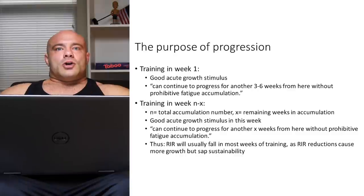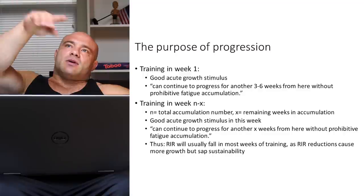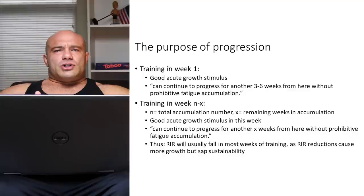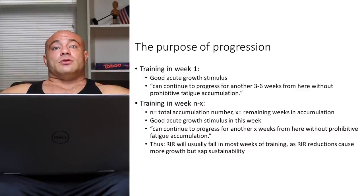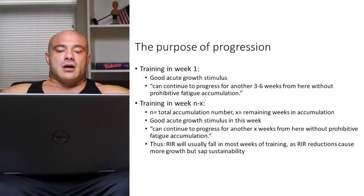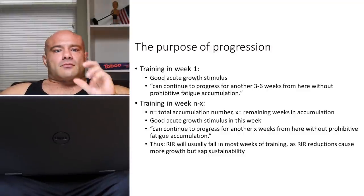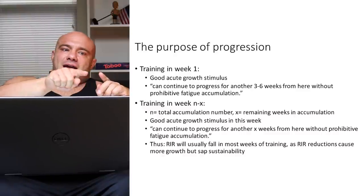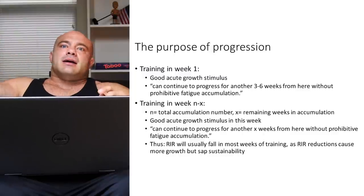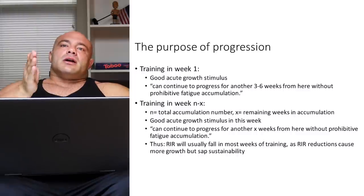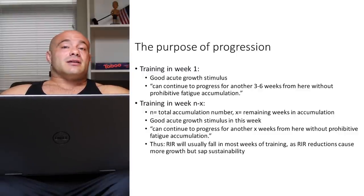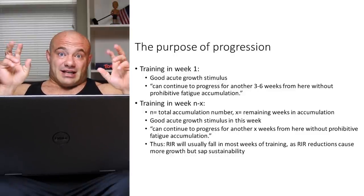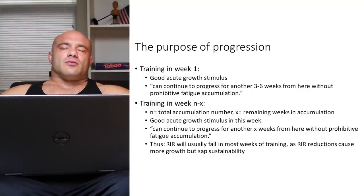From this, we know that if we start to hit very low reps in reserve or go to failure, fatigue spikes like crazy and we probably have to deload the next week. So reps in reserve will usually either stay stable or fall in any given week of most training. RIR reductions cause growth — every time you do less RIR, closer to failure, you cause more hypertrophy — but they also sap sustainability. So you start a mesocycle at three or four reps in reserve, and as you progress through, your RIR goes down to zero or one, then you deload and repeat.